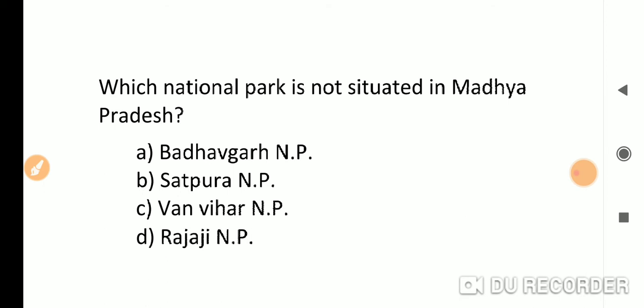Which national park is not situated in Madhya Pradesh? Pandhagad, Satpura, and Panna are all in MP. Rajaji is in Uttarakhand. So the correct answer is option B.